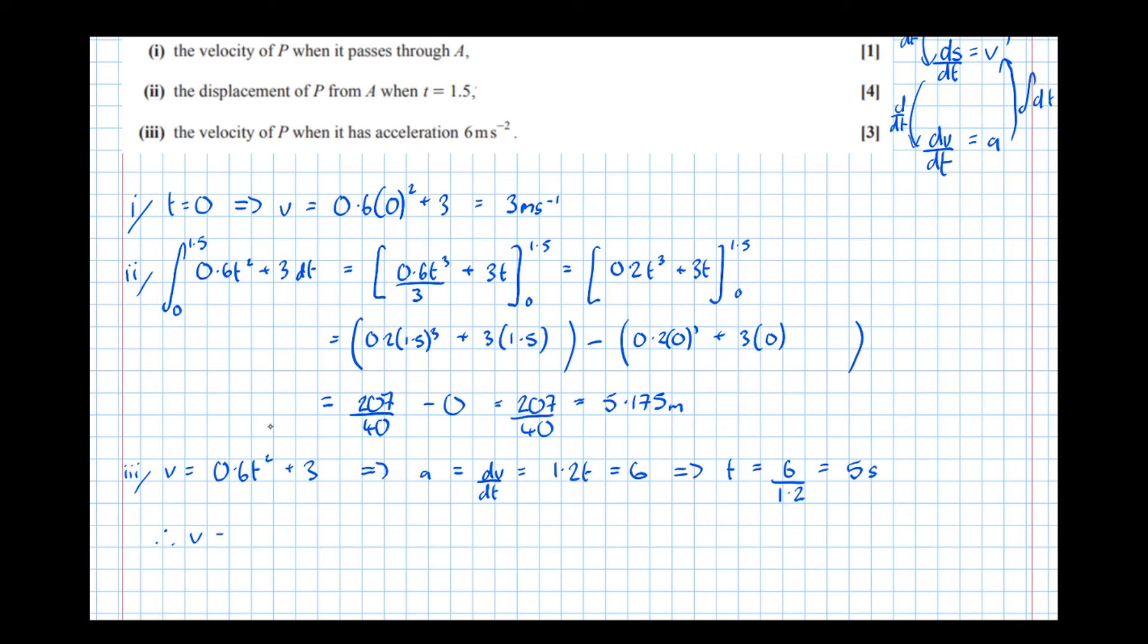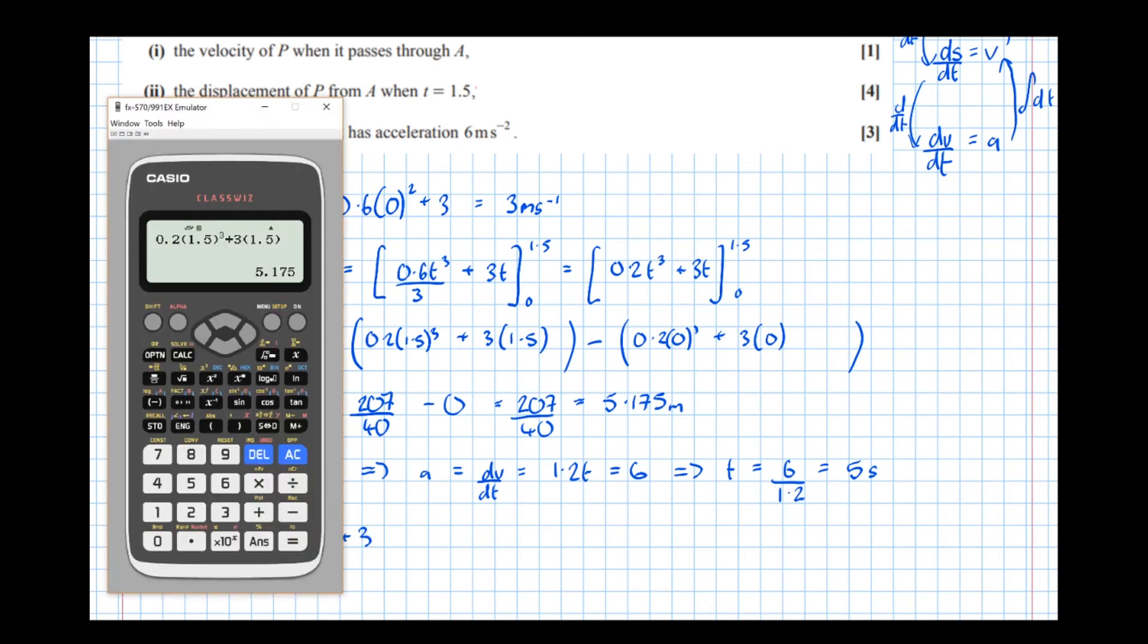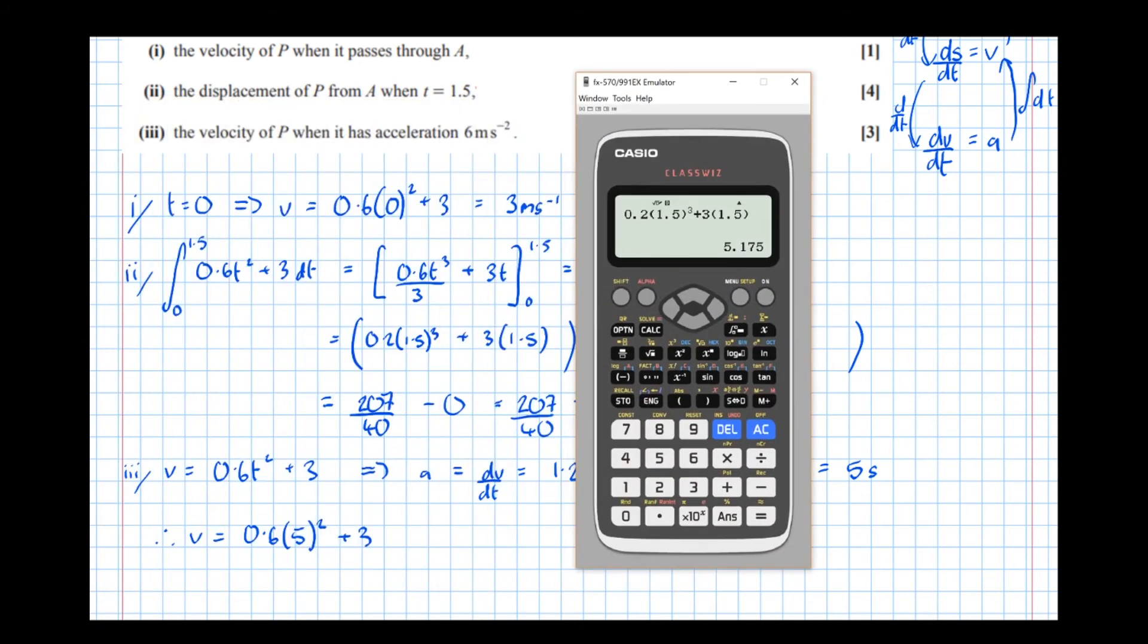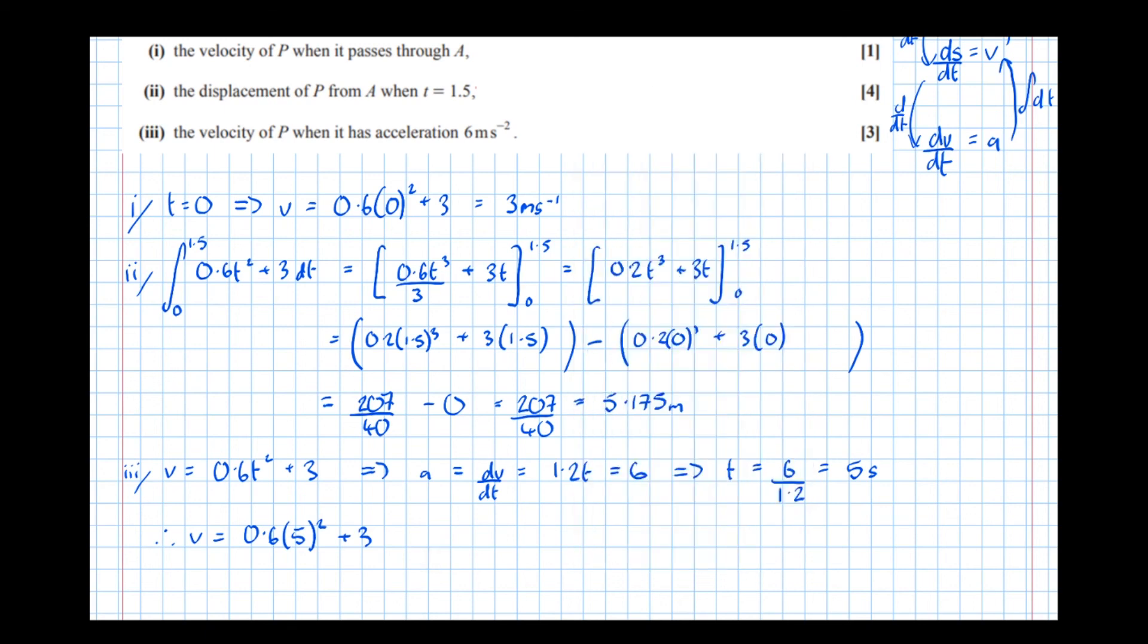Therefore v equals 0.6 lots of 5 squared plus 3. So putting in the calculator, 0.6 lots of 5 squared plus 3 equals 18. And it's velocity, so the units are meters per second.